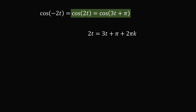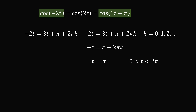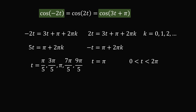Taking the arccosine and setting angles equal up to a multiple of 2 pi, we consider two pairings. First, setting 2t equal to 3t plus pi plus 2 pi k gives minus t equals pi plus 2 pi k, and the only value in the range 0 to 2 pi is t equals pi. Second, setting negative 2t equal to 3t plus pi plus 2 pi k and simplifying gives t equals pi over 5, 3 pi over 5, pi, 7 pi over 5, and 9 pi over 5. And that's the answer.